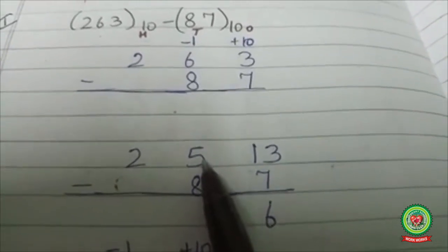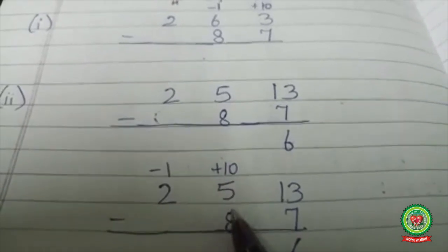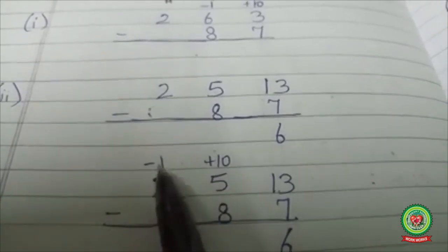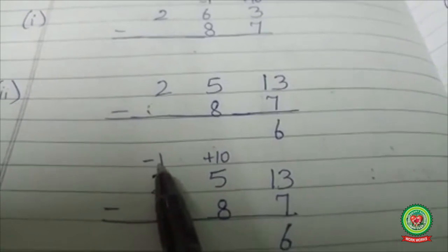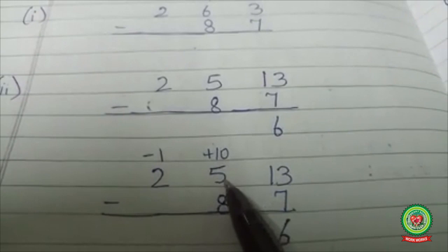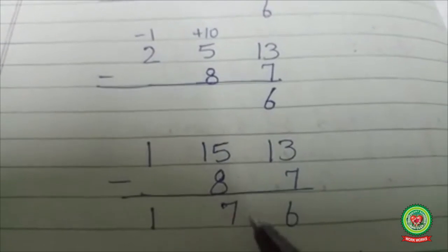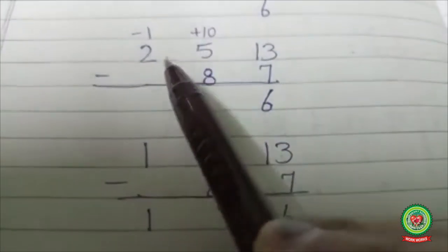Again, 8 is bigger than 5, so we are going to add 10, and here we are going to subtract minus 1. Now the number becomes 10 plus 5, that is 15.